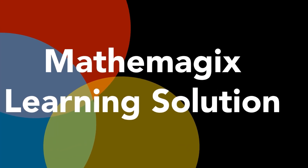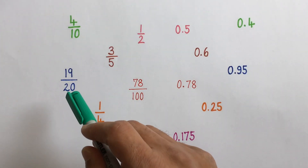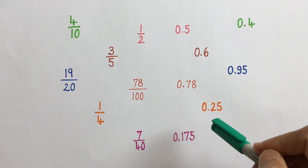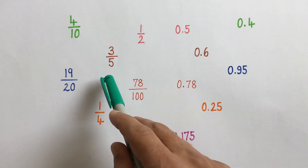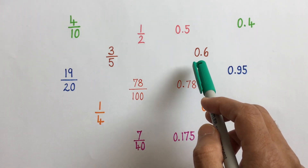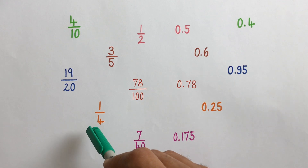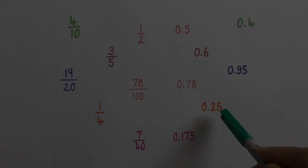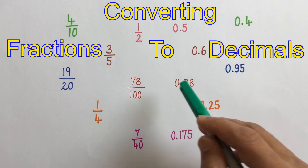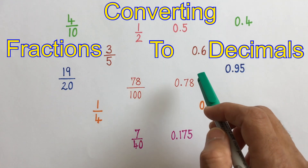Welcome to Mathematics Learning Solution. Fractions can also be written in the decimal form. As you see here, three-fifths is the same as 0.6, or a quarter or one-fourth is the same as 0.25. In this video, we will learn how to convert fractions to decimals.